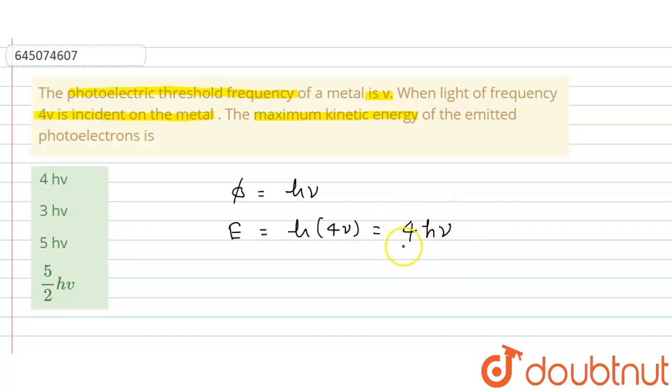So energy of one incident photon is 4Hµ, and minimum energy required to eject an electron from the metal surface is Hµ. So maximum kinetic energy...